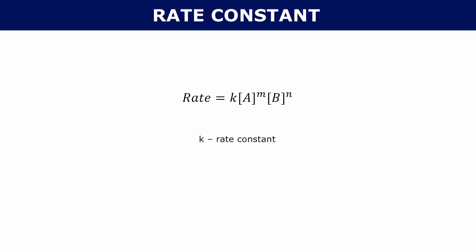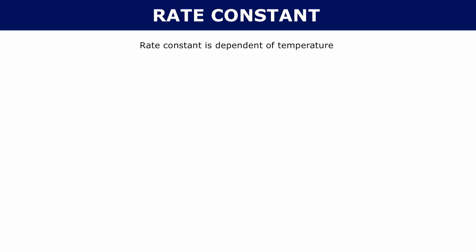Now it's called the rate constant, but it's not always a constant value. Your rate constant is actually dependent on temperature, and that dependence is mapped out by the Arrhenius equation.